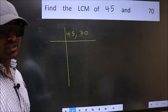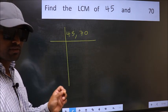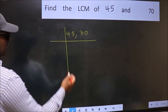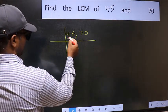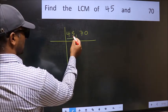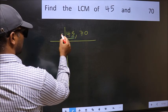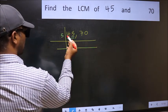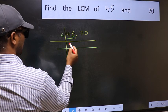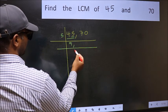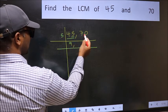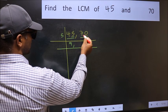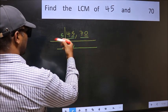Now focus on the first number, which is 45. The last digit is 5, so take 5 as the divisor. When do we get 45 in the 5 times table? 5 nines are 45. The other number, 70, has last digit 0, so this number is also divisible by 5.